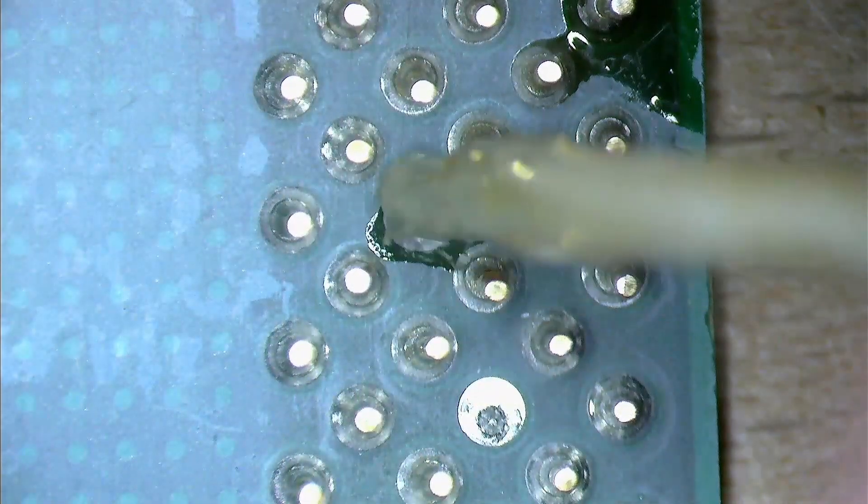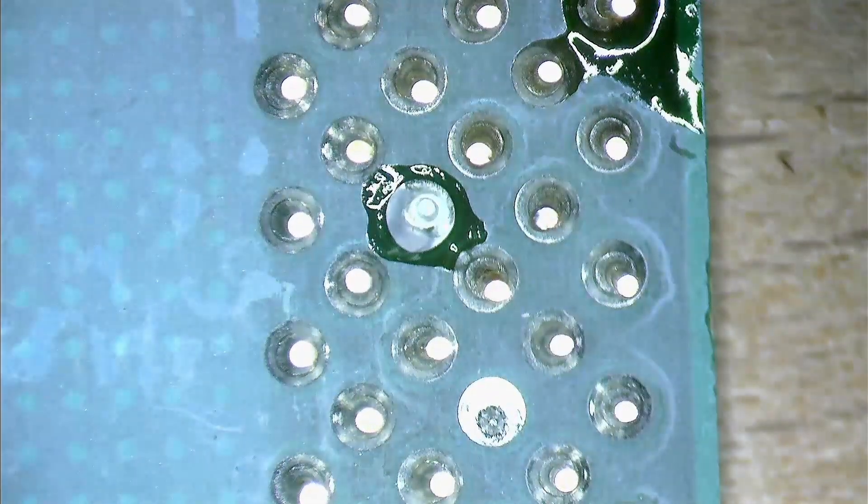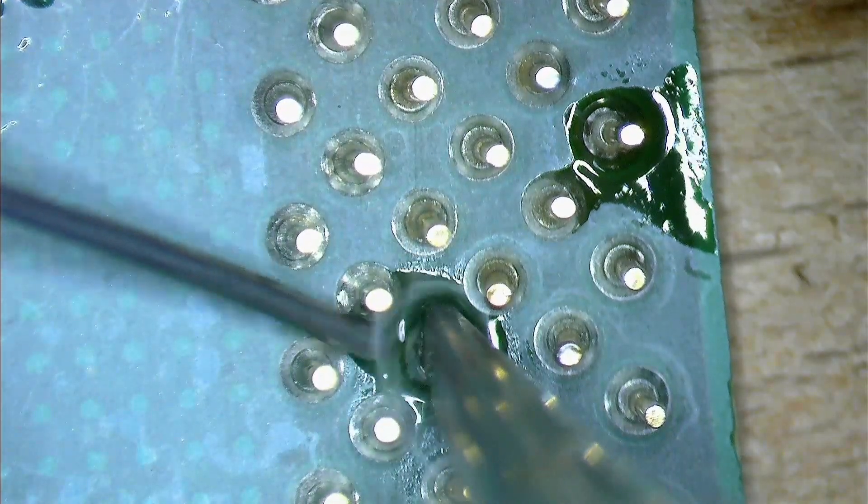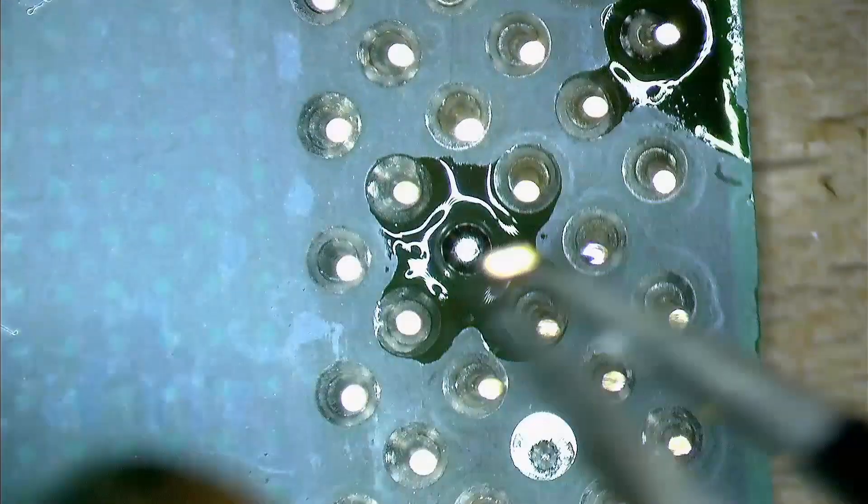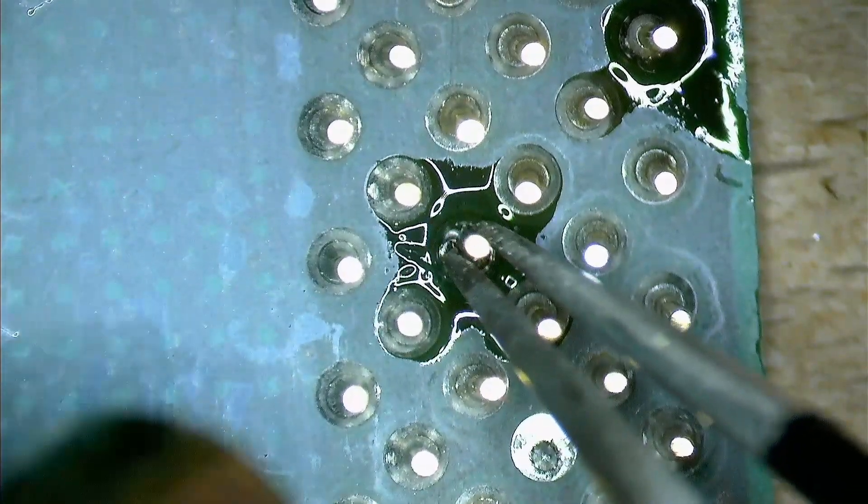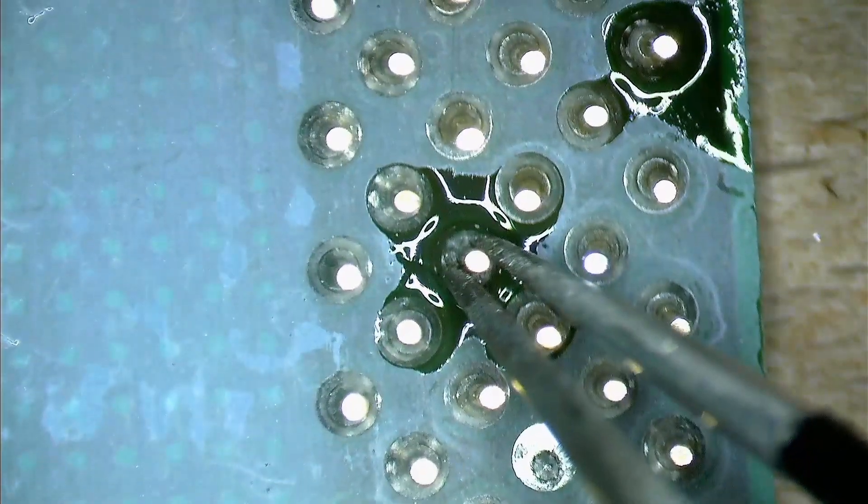So what's my takeaway so far? A hot air station with a correct sized nozzle is essential. The right angles to work are important as well, otherwise you keep burning yourself. And use flux, it makes work so much easier. And if you can, remove the old solder as much as possible.